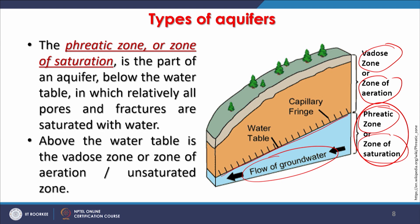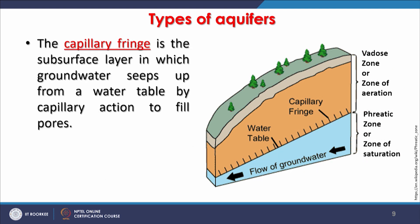Without knowing the top and bottom impervious layers we can only call it an aquifer; if we know those layers, we may call it confined. In most hard rock terrain conditions in India — which is a large part of the country — where water is being withdrawn, the condition is that of an unconfined aquifer. Recharging an unconfined aquifer is much easier because all the surface above is available for recharge.